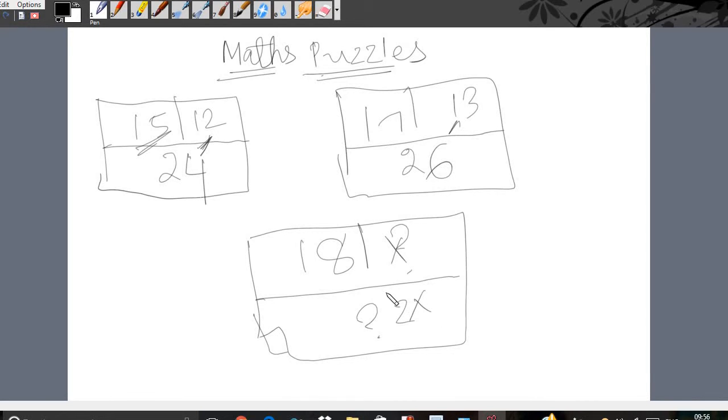But if I will take x as a number here, then I will have to take 2x over here. Then what is x? First I have to find the x. Let's see if this works or not.